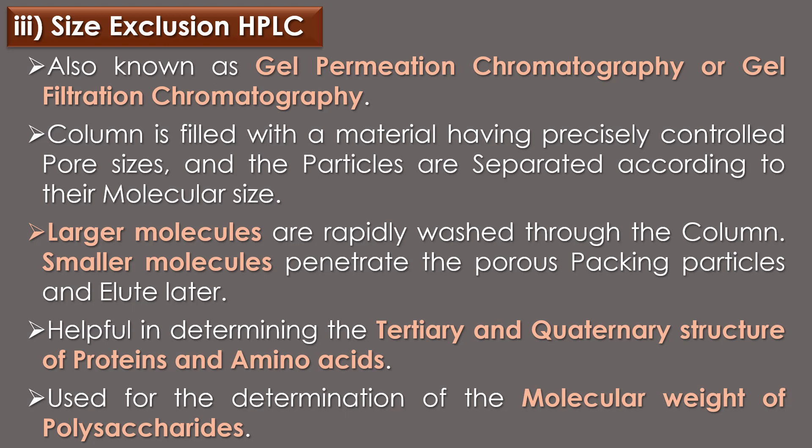The third type of HPLC is size exclusion HPLC, also known as gel permeation chromatography or gel filtration chromatography. The column is filled with a material having precisely controlled pore sizes, and particles are separated according to their molecular size. Larger molecules are rapidly washed through the column, while smaller molecules penetrate the porous packing particles and elute later. Size exclusion HPLC also helps in determining the tertiary and quaternary structure of proteins and amino acids, and is used for determination of the molecular weight of polysaccharides.